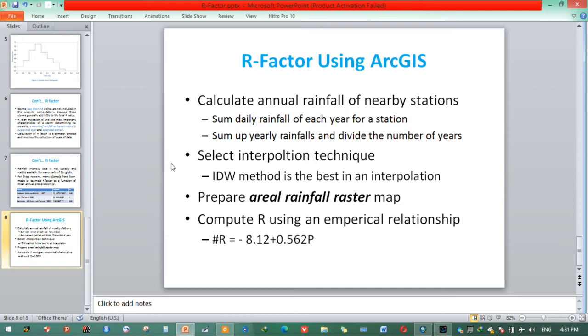After doing this, the second step is we need to select interpolation techniques. According to literatures I have read, IDW methods of interpolation techniques is the best in interpolating those rainfall data types. We need to interpolate this rainfall, mean annual rainfall.